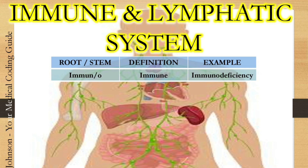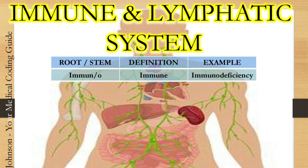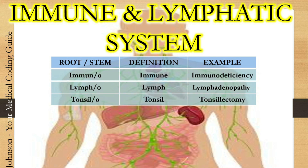We will see the root or stem words pertaining to the immune and lymphatic system. The first one is immuno — immuno means immune. Example: immunodeficiency, which means the inability or insufficiency of your immune response system. The next one is lympho — lympho means lymph. Example: lymphadenopathy, which means disease or disorder of your lymph glands. The next one is tonsillo — it means tonsils. Example: tonsillectomy, which means the surgical excision or removal of your tonsils.